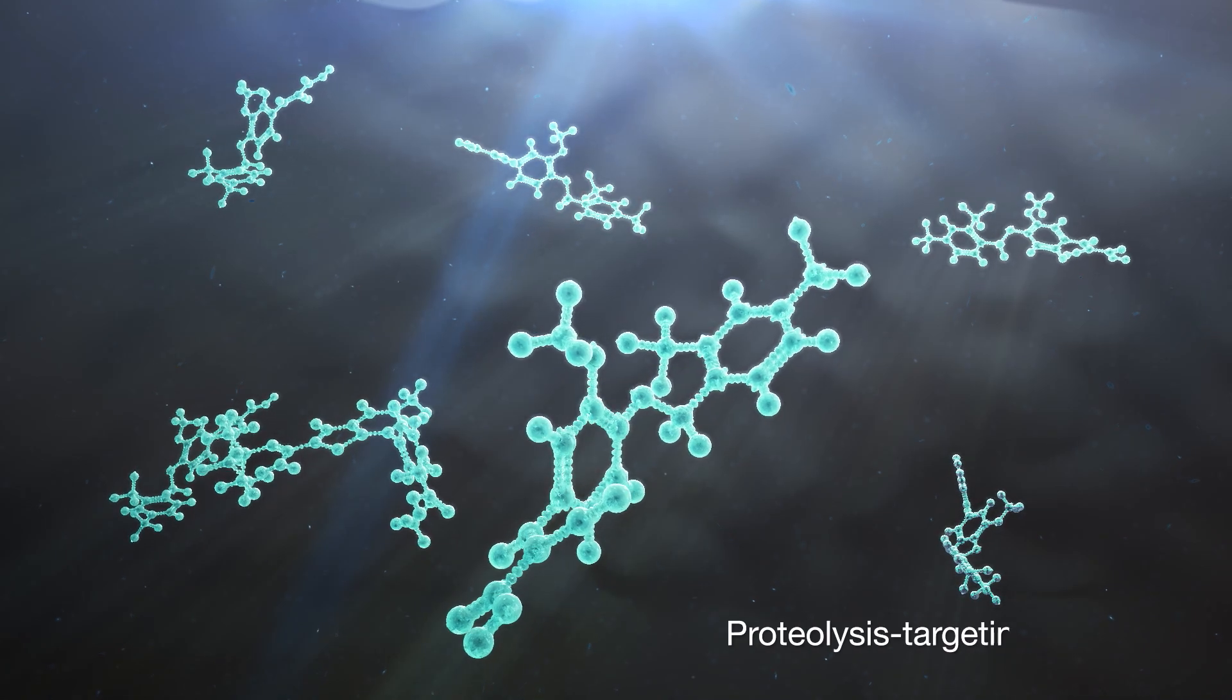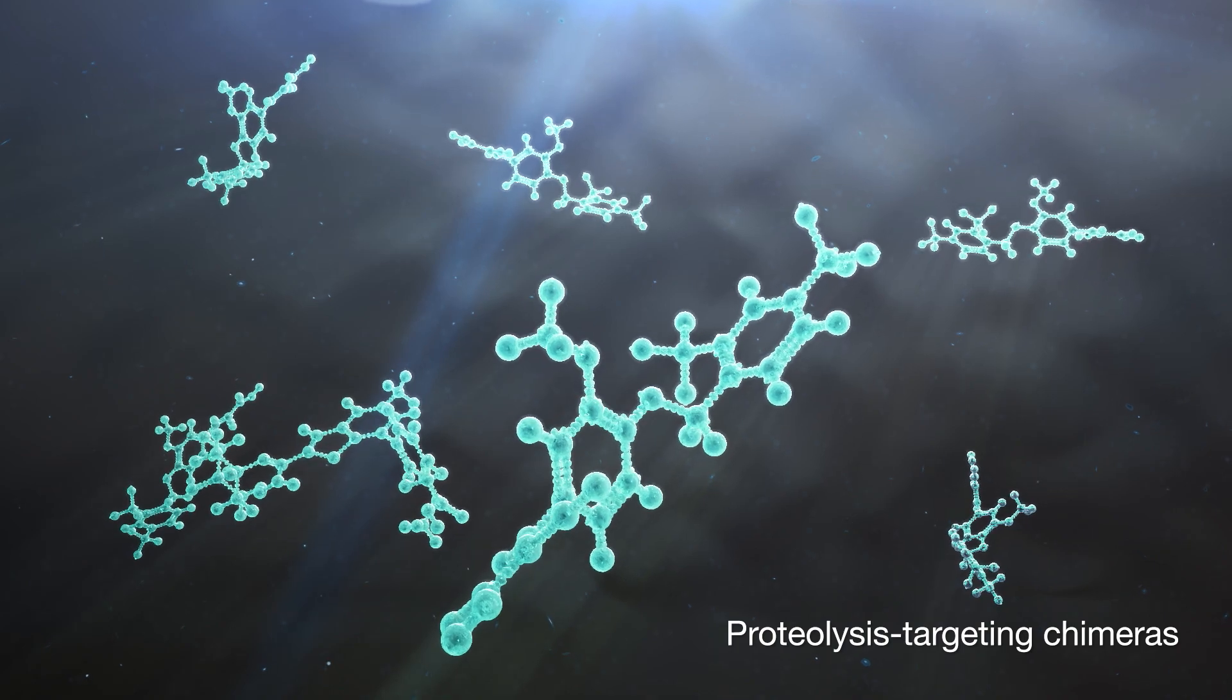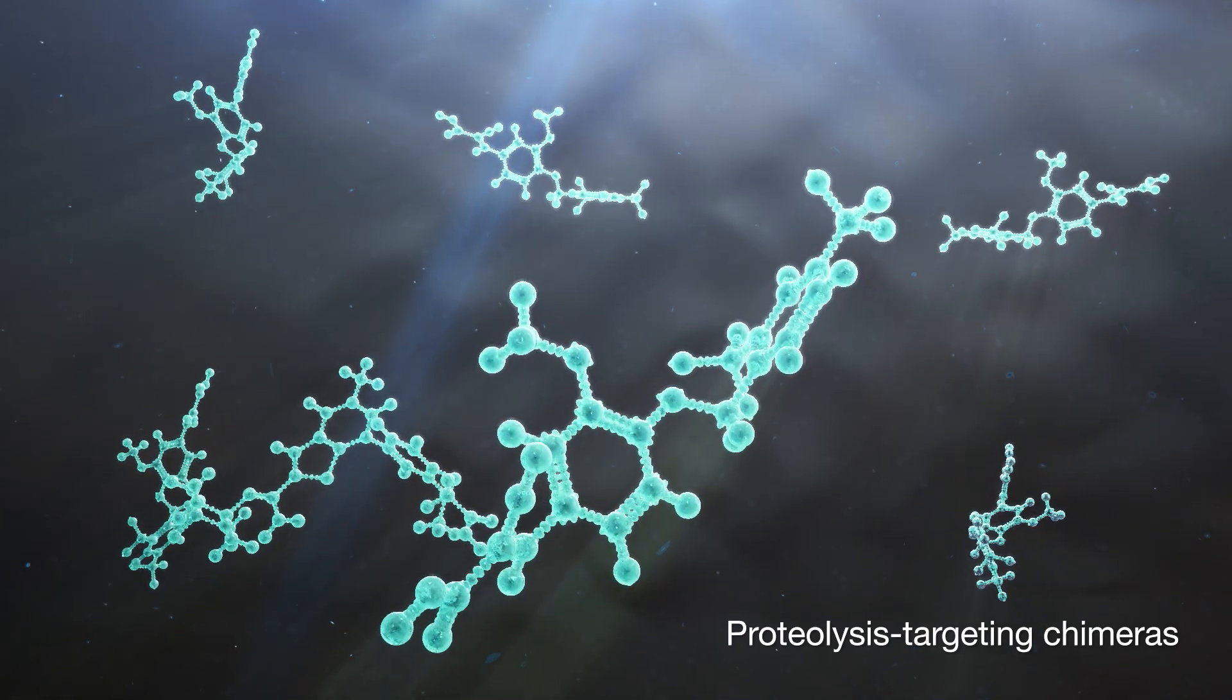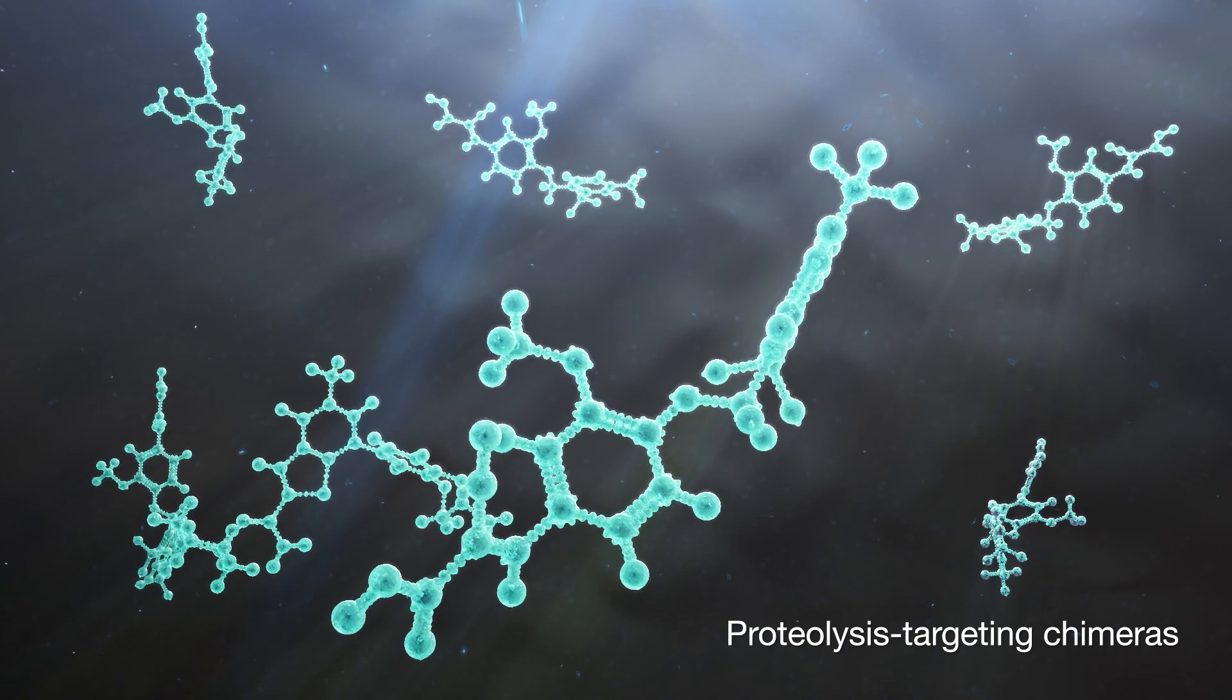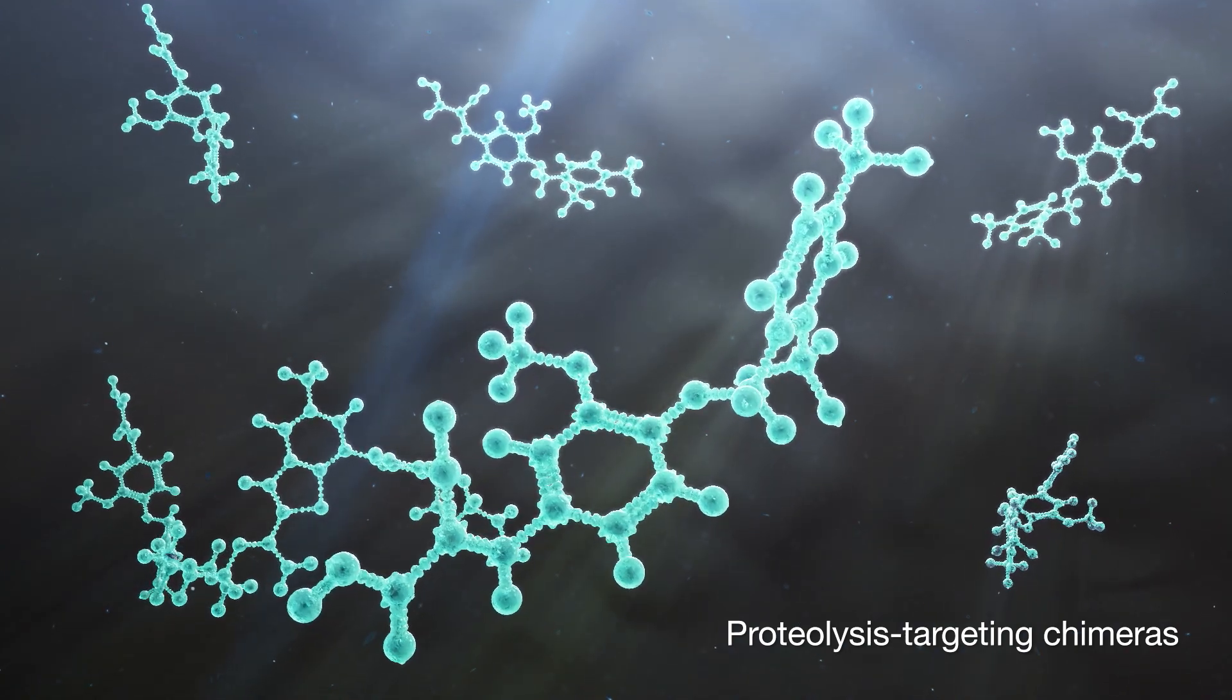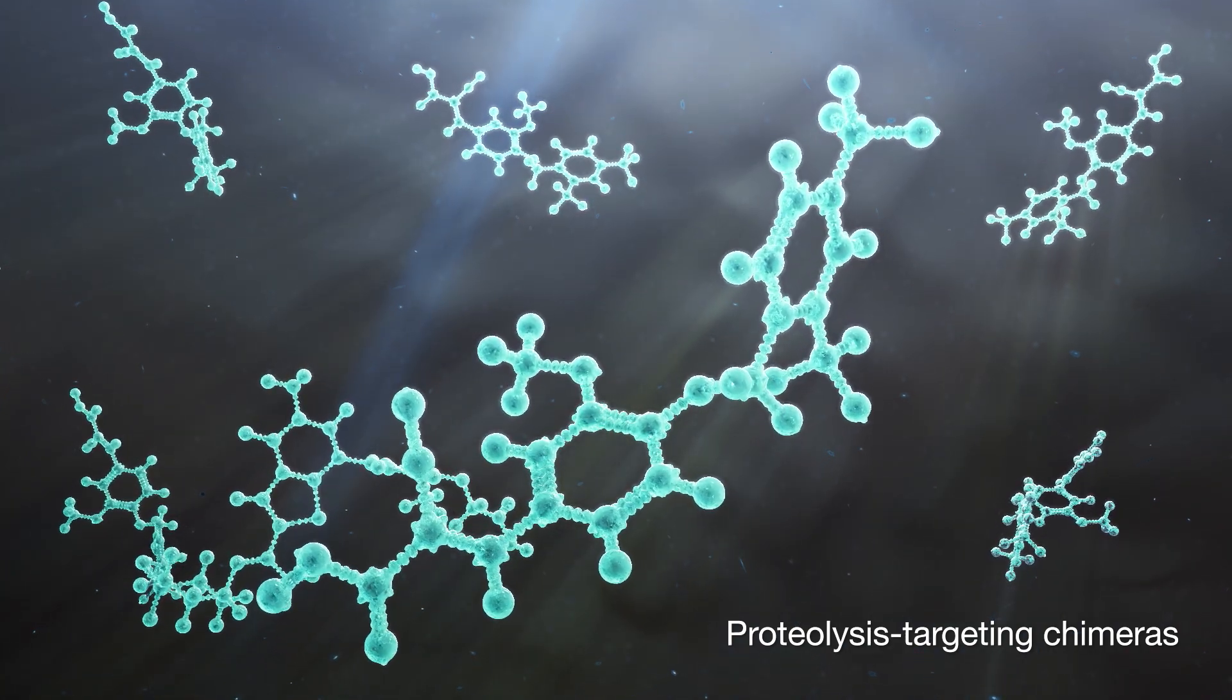Targeted protein degradation can help us understand the scientific value of targeted proteins. An example targeting the UPP is the use of proteolysis-targeting chimeras.